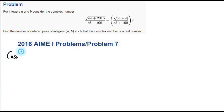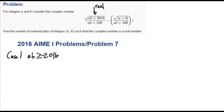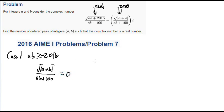We have Case 1: ab is greater than or equal to negative 2016. What this means is that this part becomes real. And if that part is real, the coefficient of i has to be zero in order for this complex number to be a real number. Because if this is real, then this coefficient just has to be zero — if it's not zero, then we have i in the complex number and it's no longer just a real number. So from here, we can tell that square root of (a plus b) over (ab plus 100) equals zero.